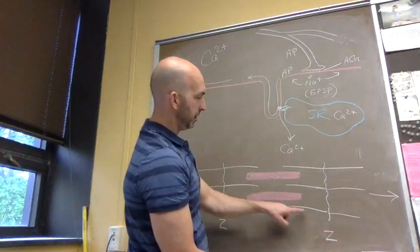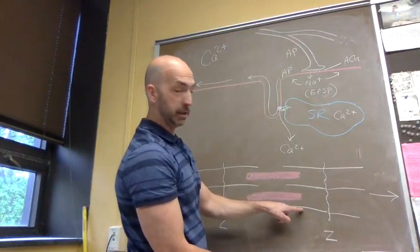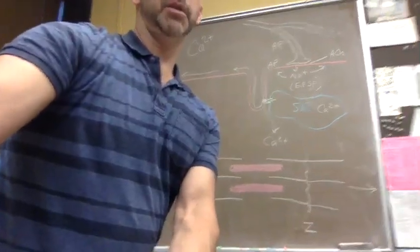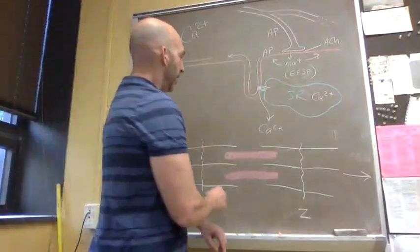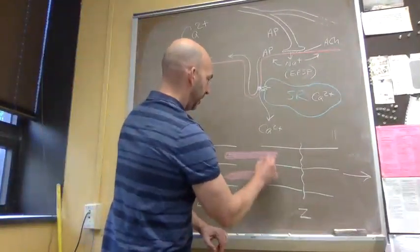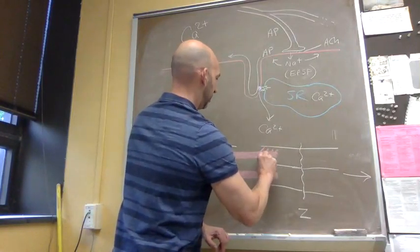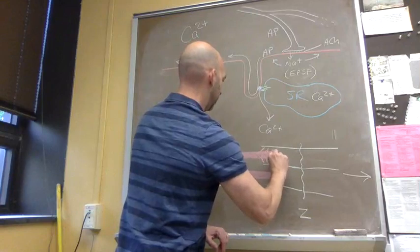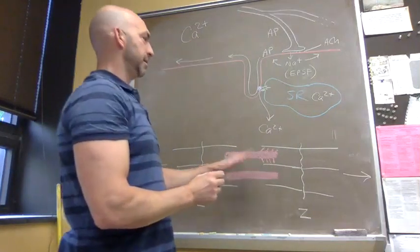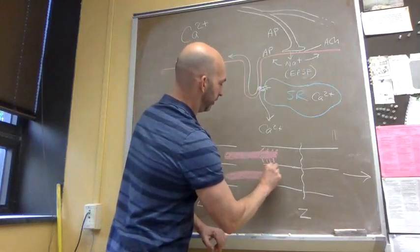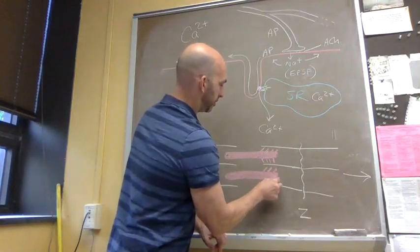Our thick filament has myosin heads on it. Now, normally when the muscle is not stimulated, those myosin heads are not attached to the thin filament, not pulling on the thin filament. They're just sort of sitting there.